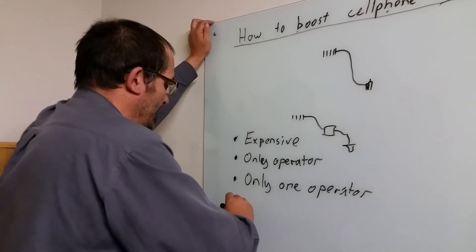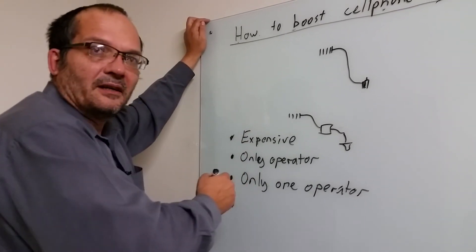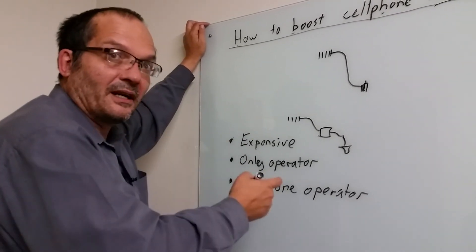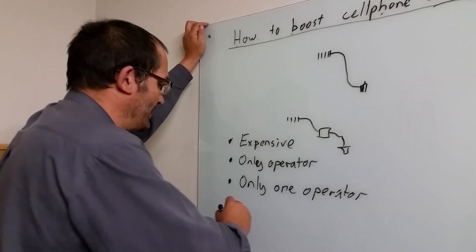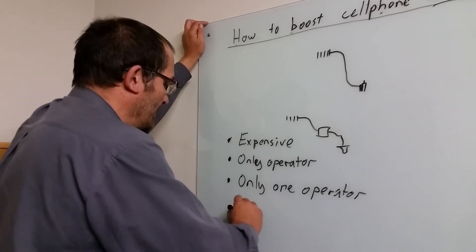In other words, it's going to only do one band at a time. So only 900 MHz or 1800, and if the operator goes from 900 to 1800, your repeater no longer works. So only one band.